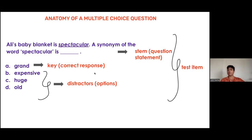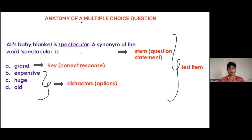The whole piece — from the question statement, the stem, the correct response, and the distractors — is called a test item.